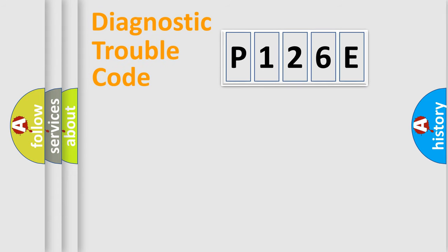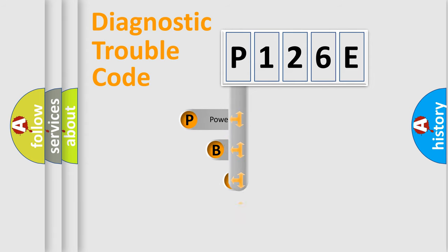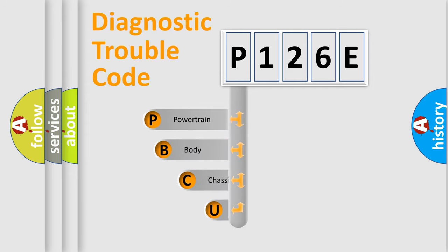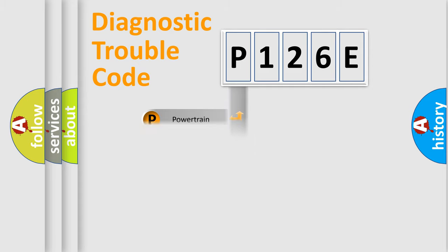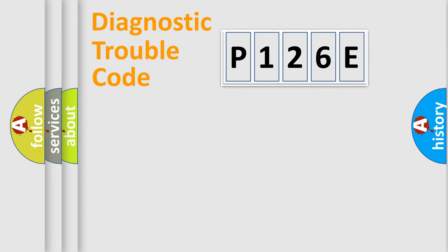First, let's look at the history of diagnostic fault code composition according to the OBD2 protocol, which is unified for all automakers since 2000. We divide the electrical system of the automobile into four basic units: Powertrain, Body, Chassis, and Network.